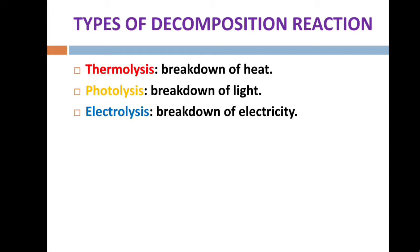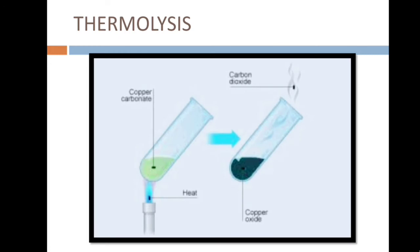Now we'll know these types of decomposition reactions one by one. The first one is thermolysis. Thermolysis is the process in which the reaction is carried out by the action of heat. As you see in the picture, here the copper carbonate is heated and when the heat is applied, it turns into copper oxide and releases carbon dioxide. So thermolysis is the process through which a reaction is carried out by heating.